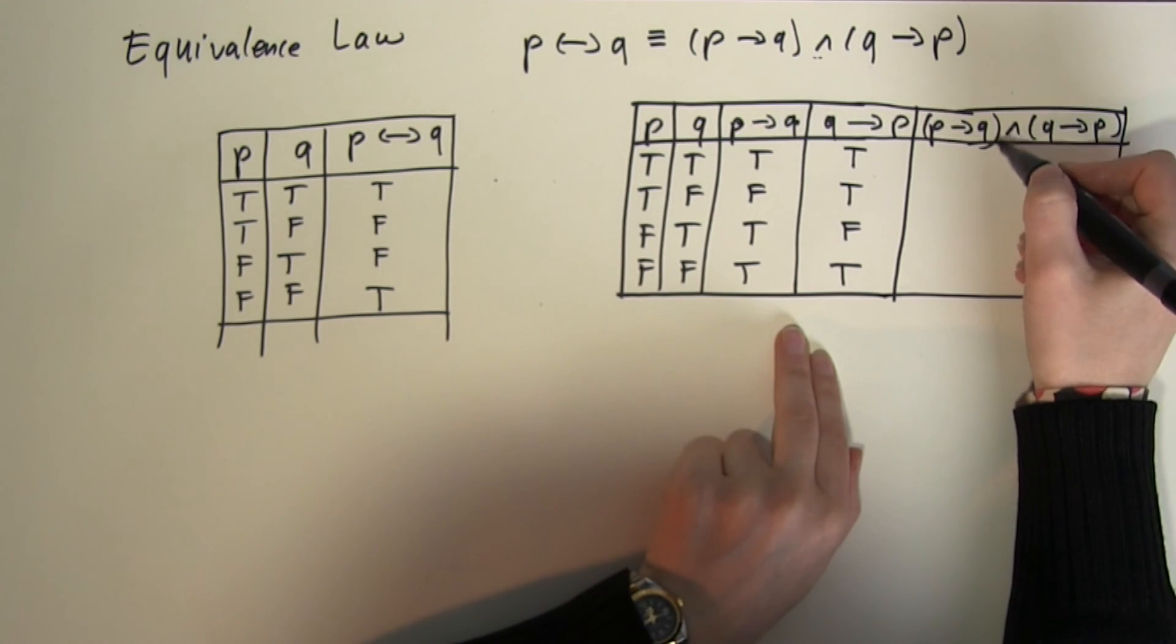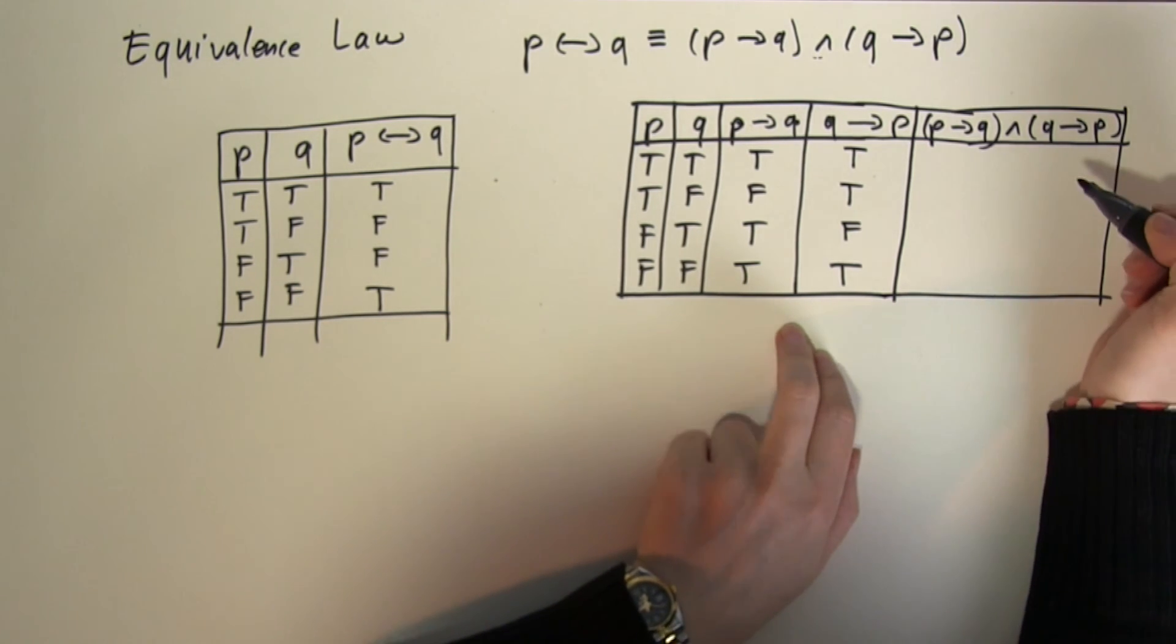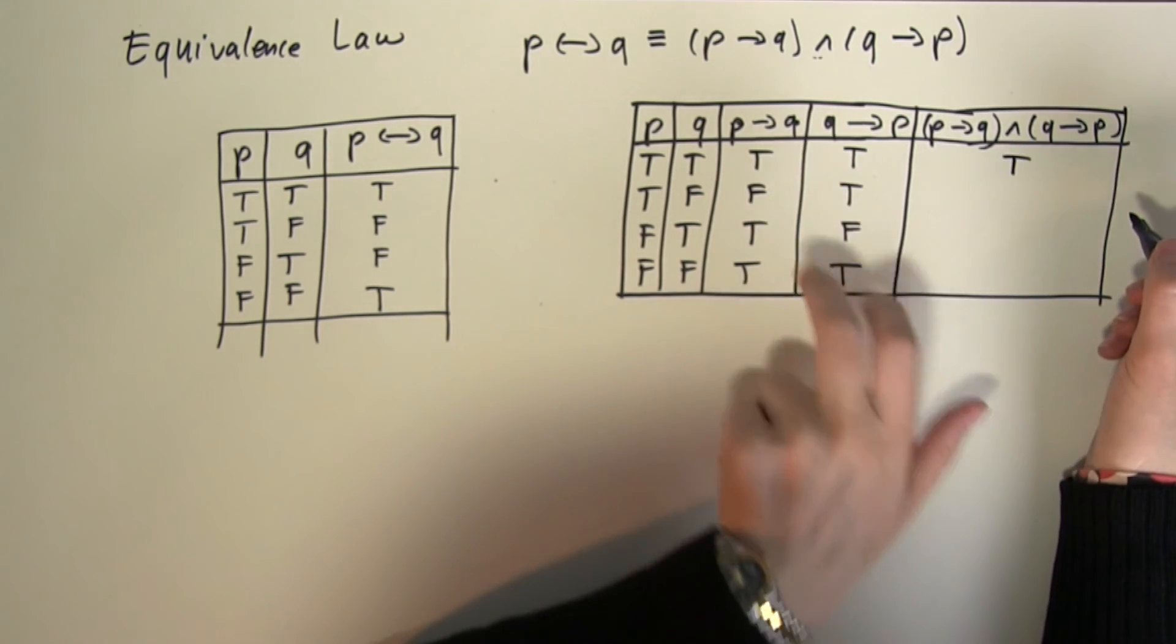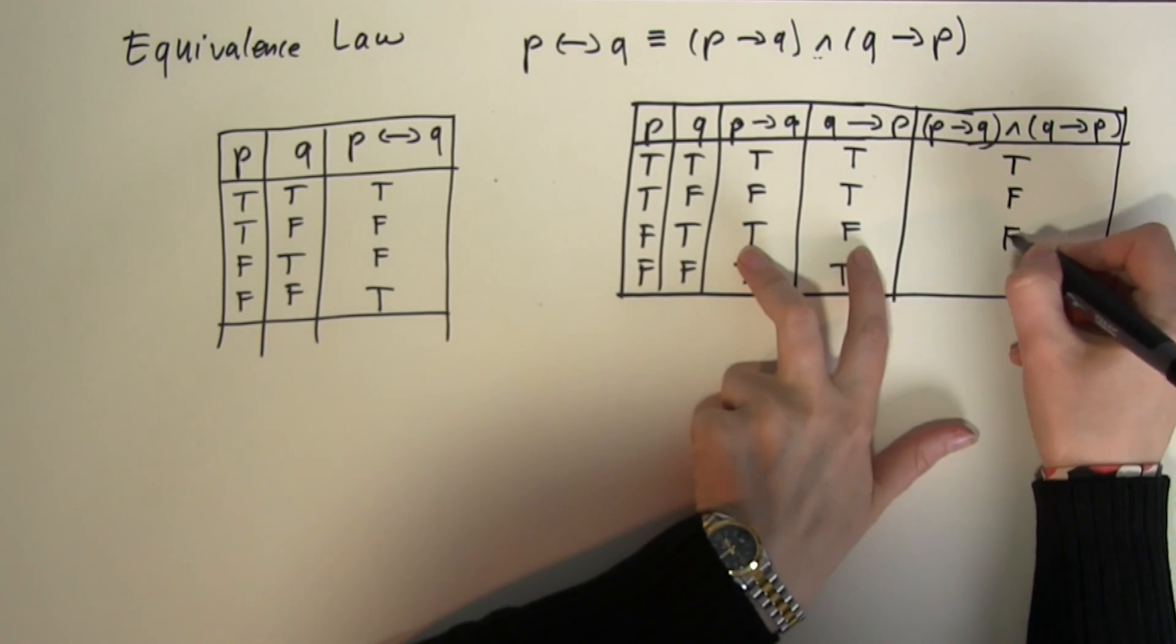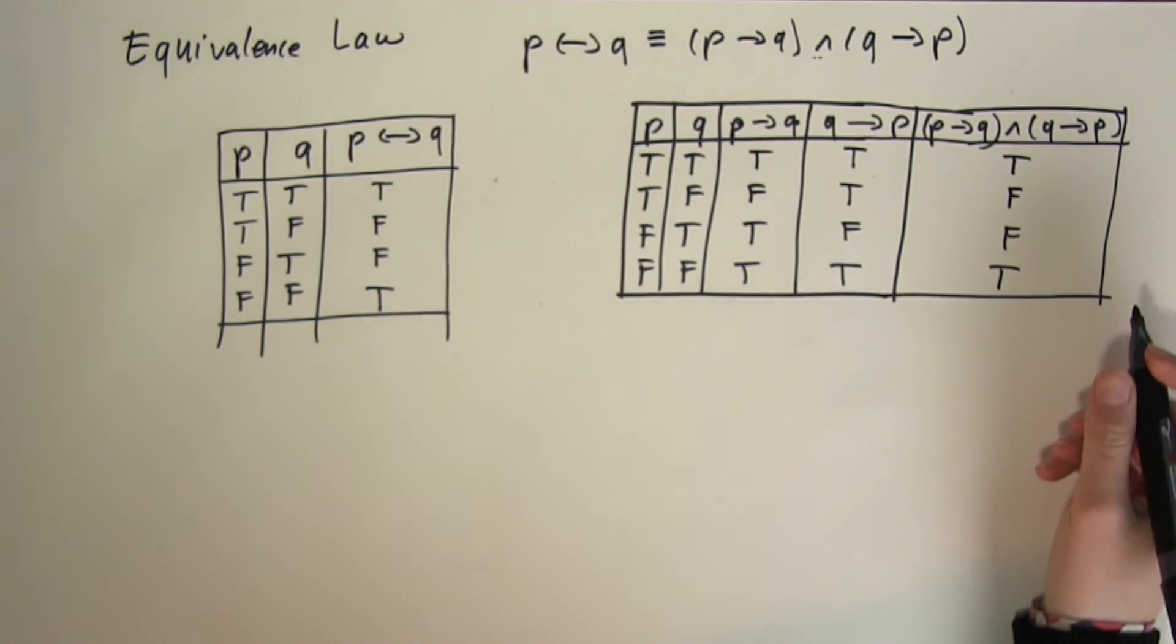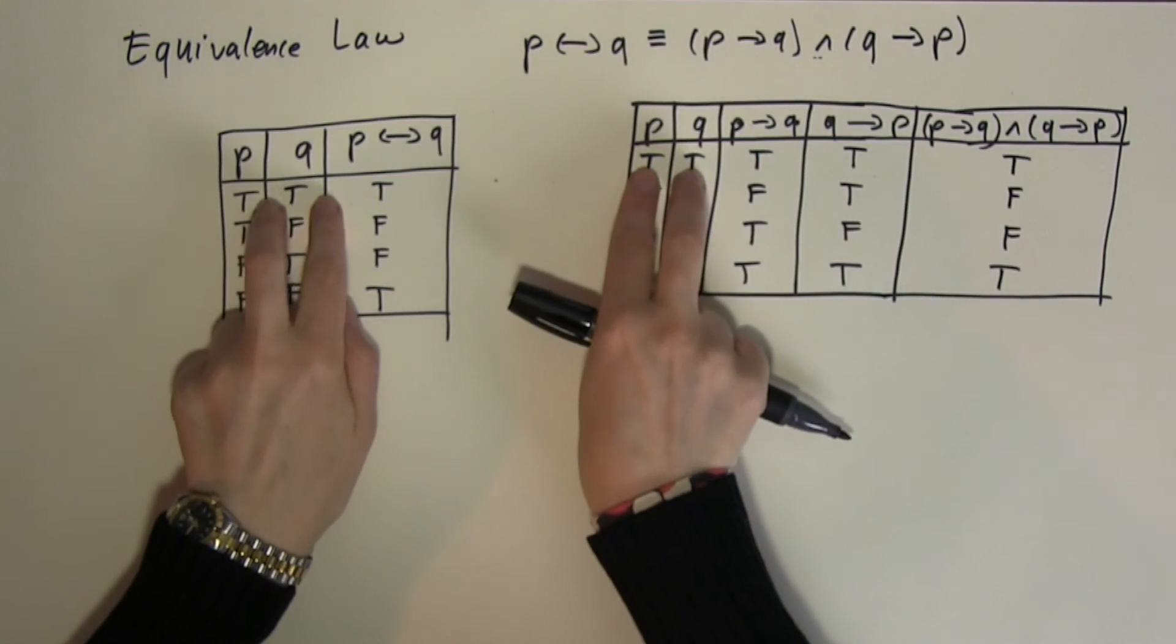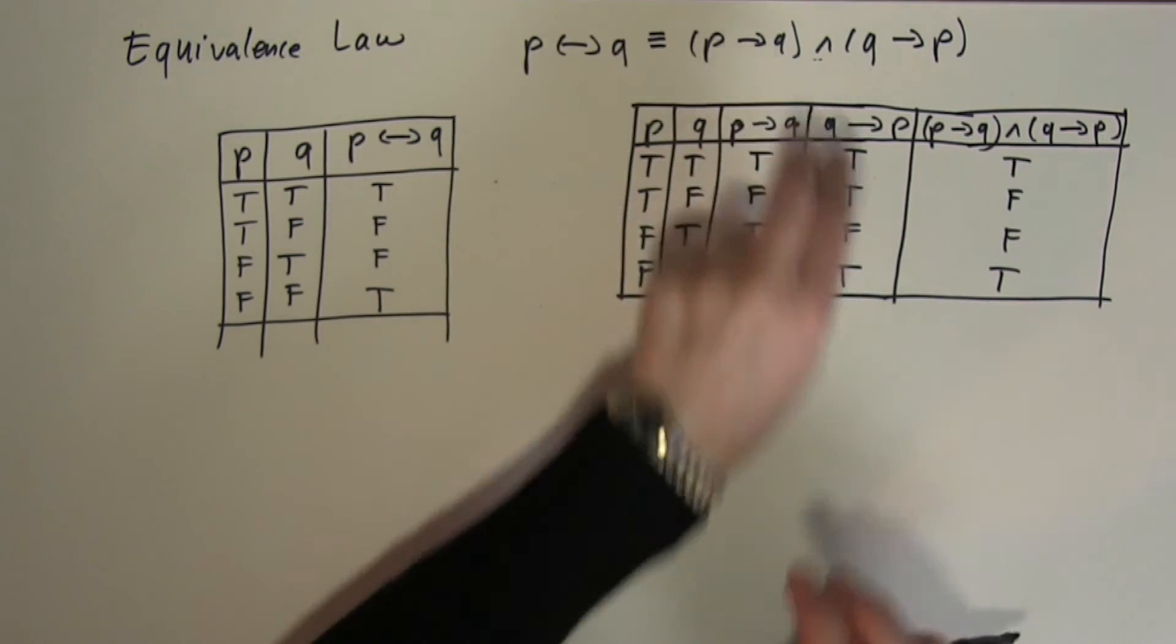What does the AND operator do? AND returns true if both of them are true. True and true is true. False and true is false. True and false is false. And true and true is true. And look we ended up with exactly the same output values following the same input combinations. So yes they are logically equivalent.